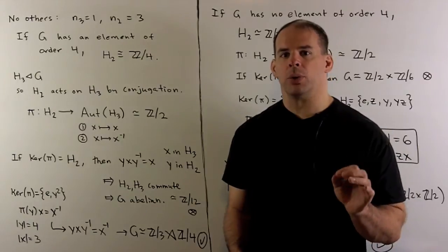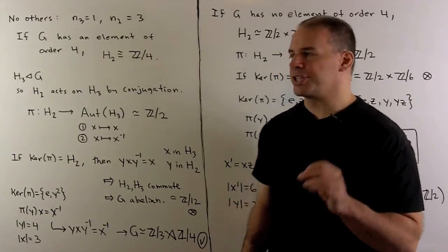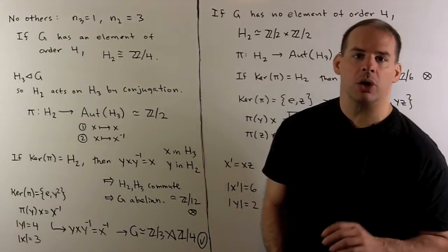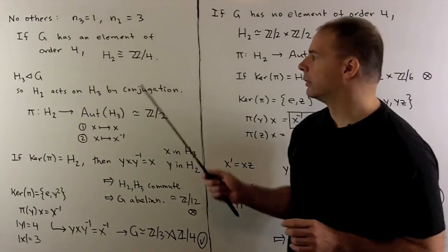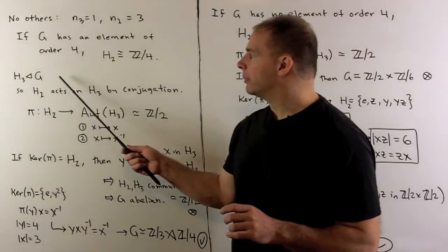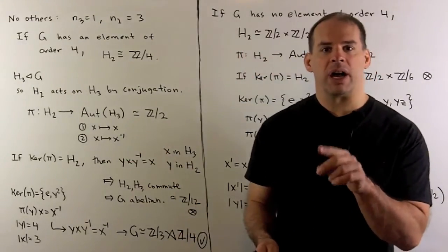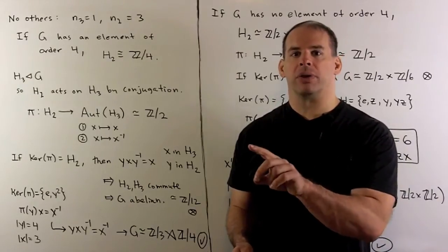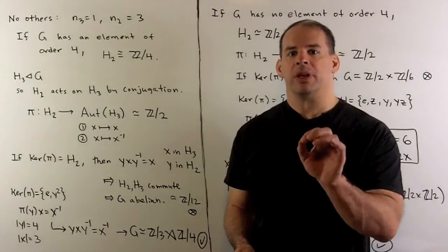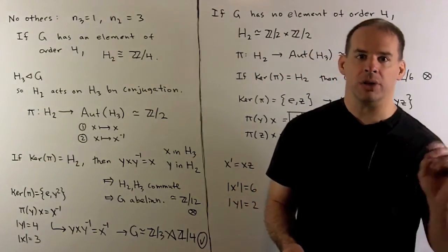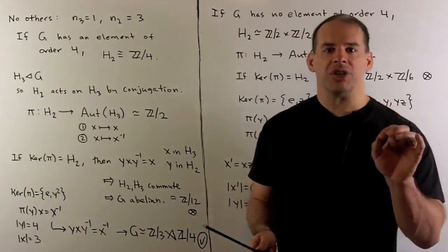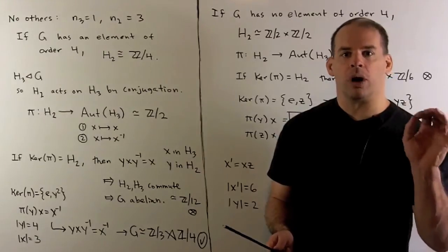Let's show that these are the only two isomorphism types. First case, if our group has an element of order 4, then the Sylow 2 subgroups are all isomorphic to Z mod 4. We have a unique Sylow 3 subgroup, so it's normal. That means we conjugate by any element in the group, carries our Sylow 3 back to itself. So conjugating by an element of our group, it's going to induce an automorphism of our Sylow 3 subgroup.